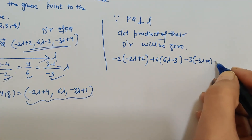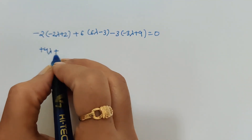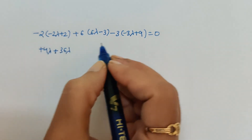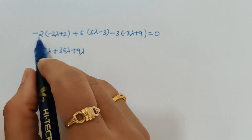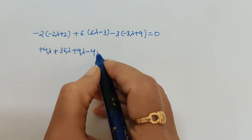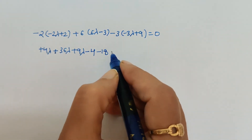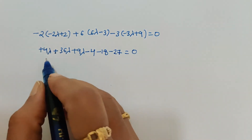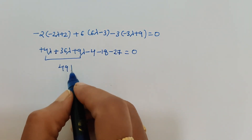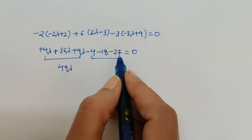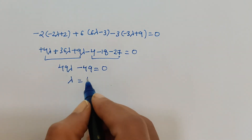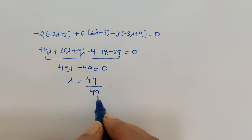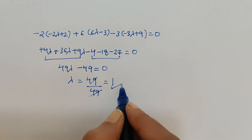Adding the λ terms: 4λ + 36λ + 9λ = 49λ. Adding the constants: -4 - 18 - 27 = -49. So 49λ - 49 = 0, which gives λ = 1.